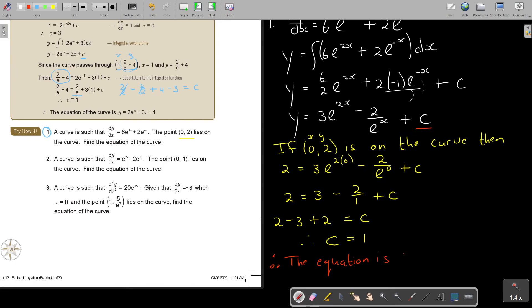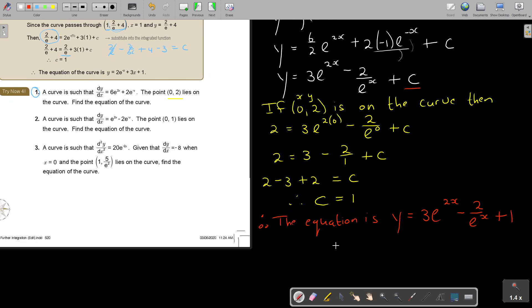y equals 3e^(2x). I can leave it like this, minus 2 over e^x, or I can put it 2e^(-x). It doesn't matter. Plus 1. And that is going to be my final answer. Remember, you can, or you can write it like this: y is equal to 3e^(2x) minus 2e^(-x) plus 1.